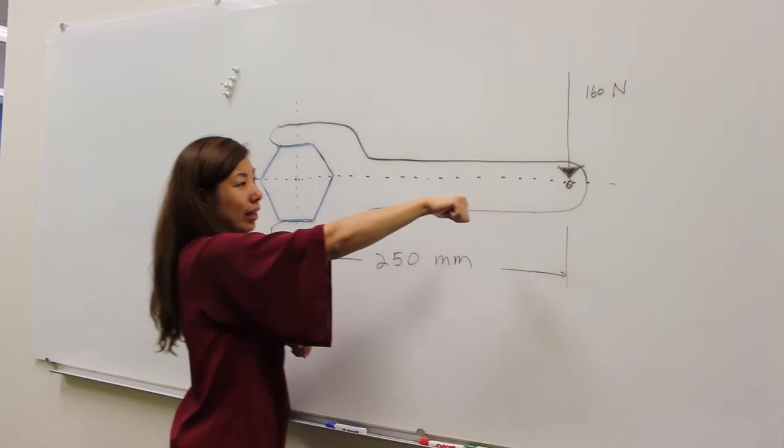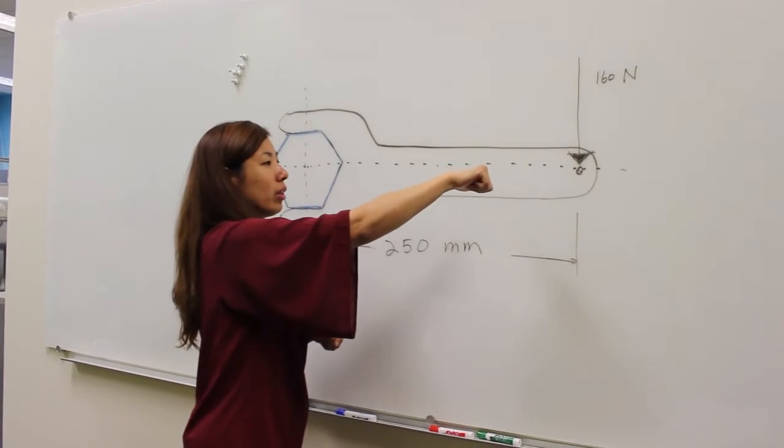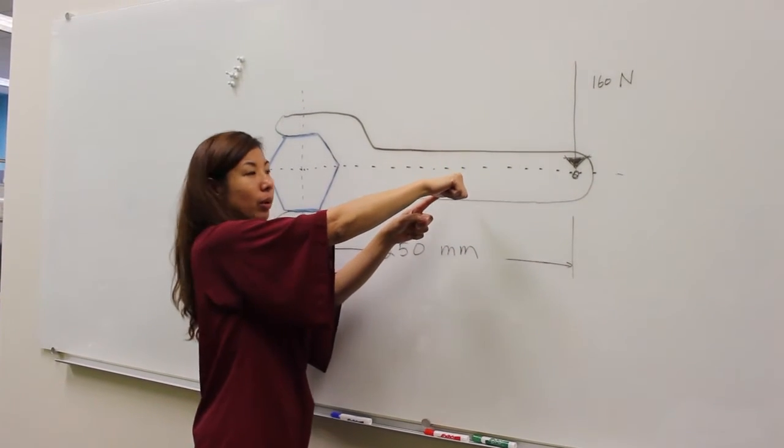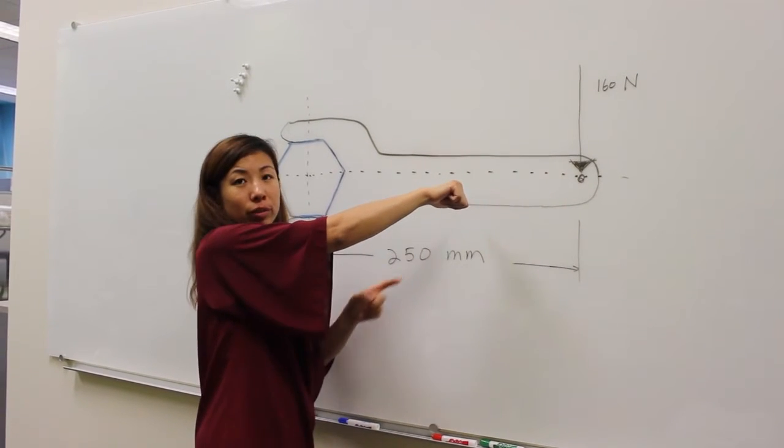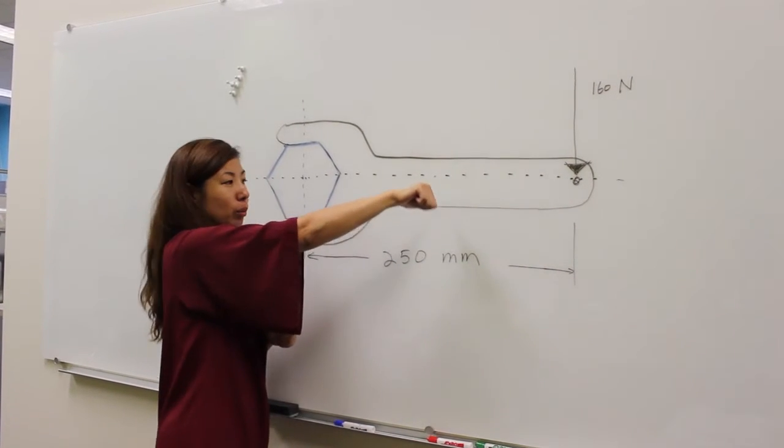When applied to this wrench, your thumb is pointing inward into the wall, or away from you. This means the moment is negative.